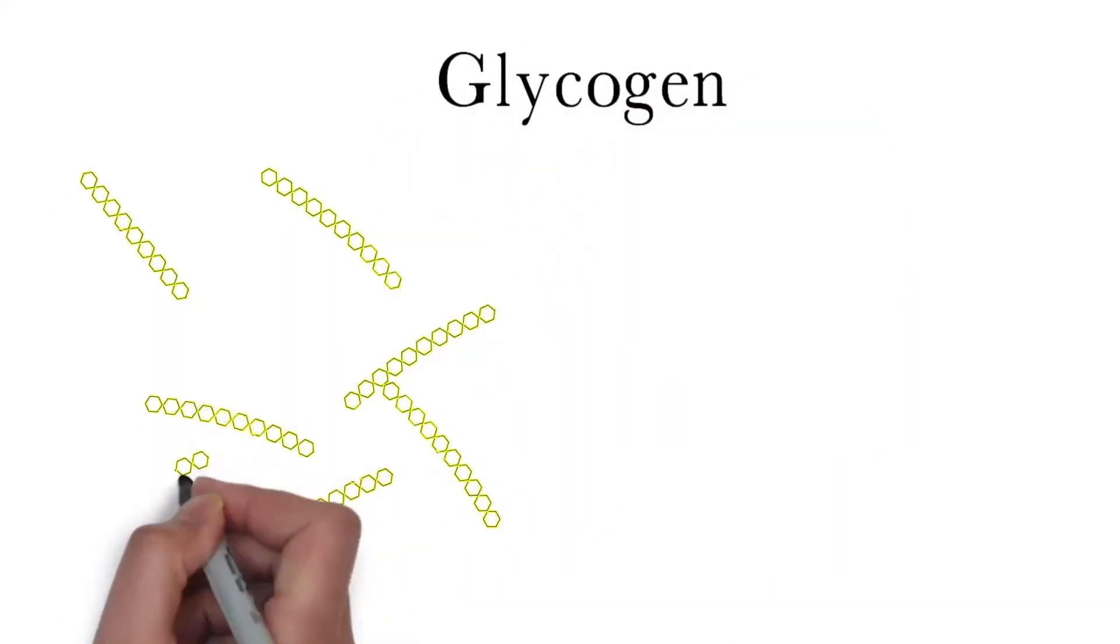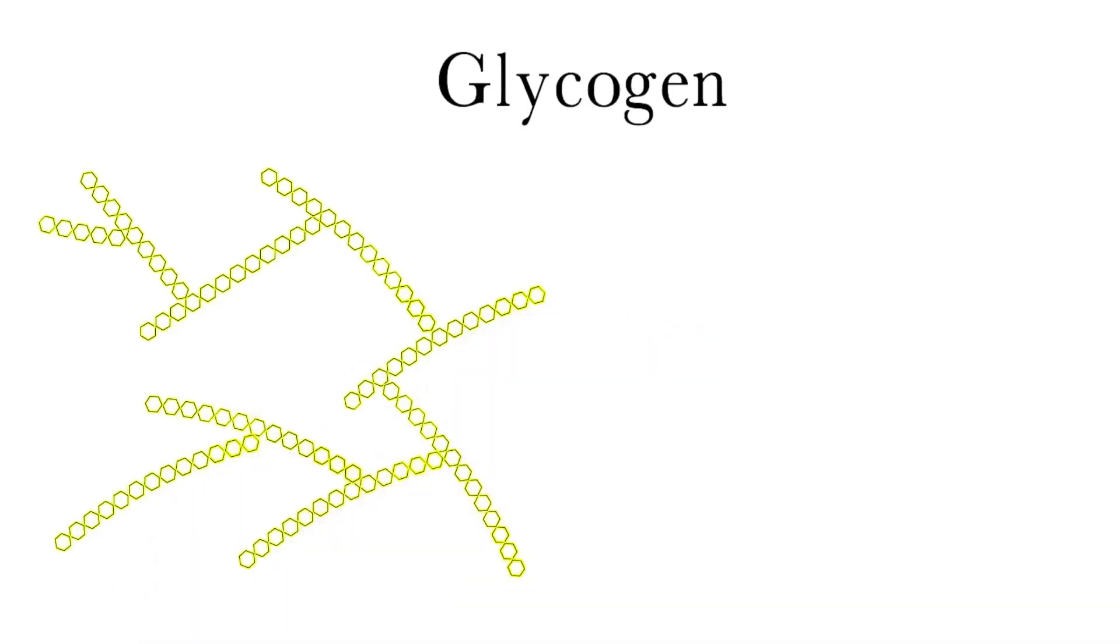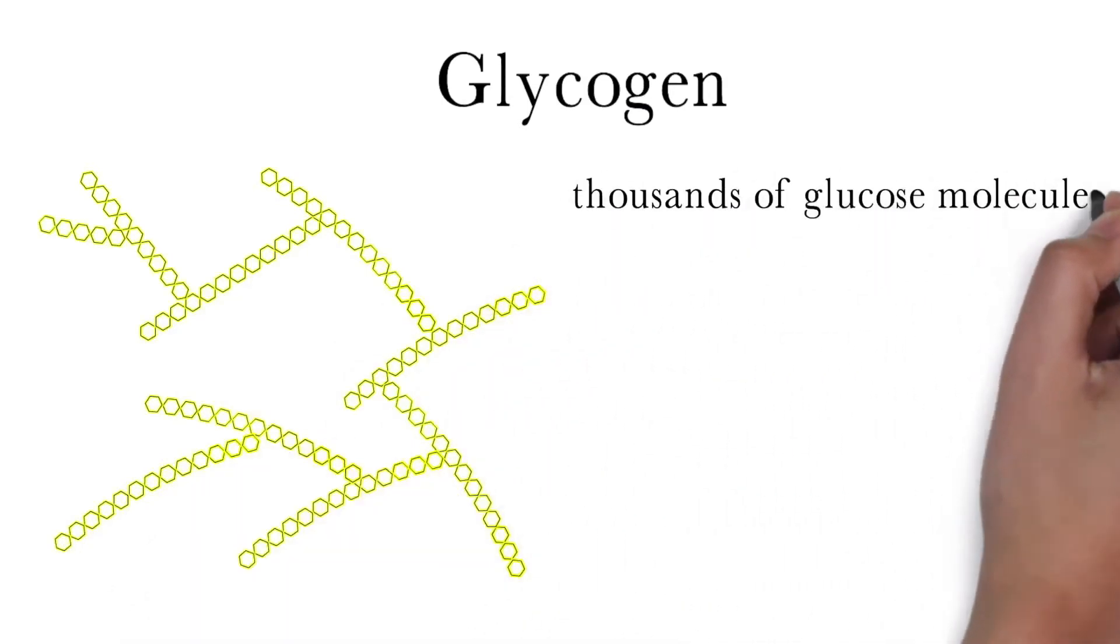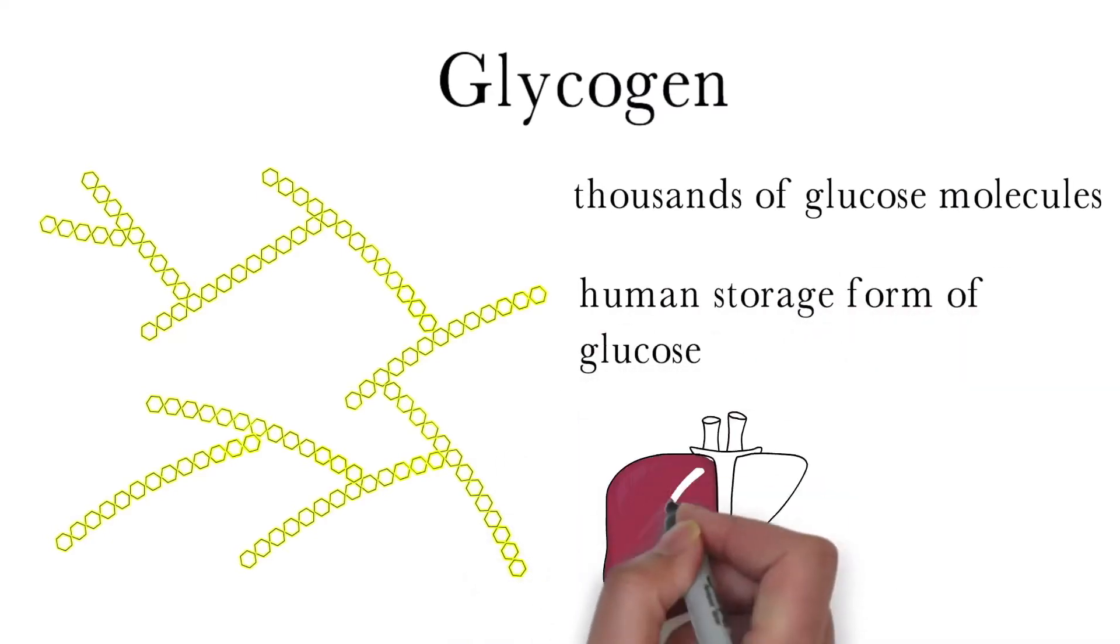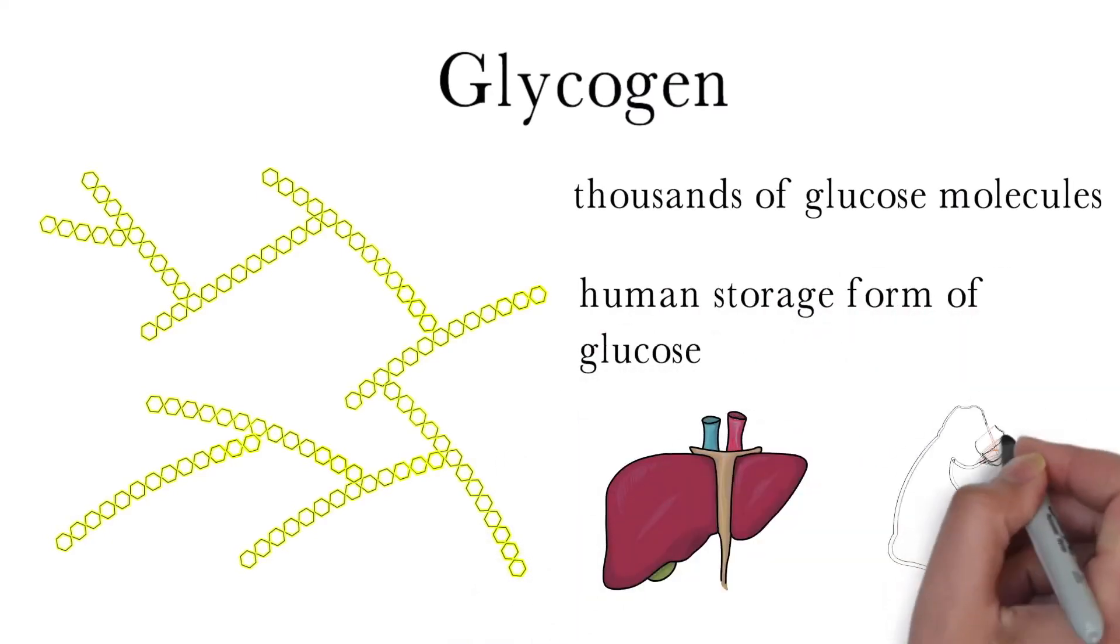Glycogen is a highly branched polymer consisting of hundreds to thousands of glucose monosaccharides. In the human body, we store glucose in the form of glycogen for later use. It is predominantly stored in the liver and muscles.